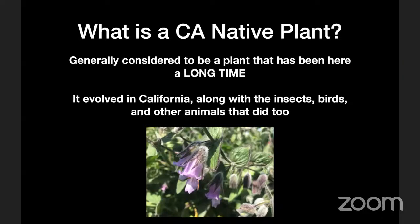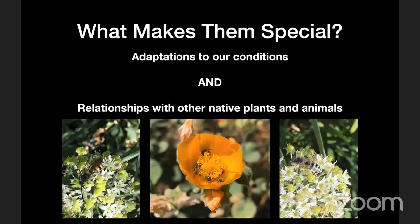Let's ground ourselves quickly for those just getting into this. What is a California native plant? A non-scientific definition: a plant that's been here a long time, a plant that evolved in California along with the insects, birds, and other animals that evolved in California as well. So it's really suited to place and has unique interactions with native insects, birds, and other animals. A California native plant is not rosemary. It's not aloe vera. Those are low-water plants, but California native plants are plants that are truly from here.